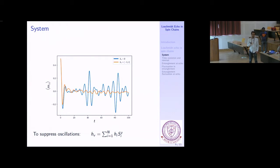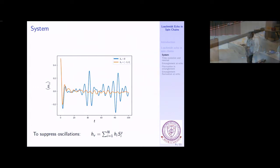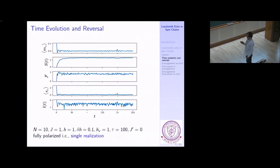for example, the transverse Ising model has very large amplitude fluctuations. I'm showing the mean magnetization as a function of time for system size like 8 or 10, which is routinely accessible. This is a problem because for the echo-type phenomena we want to study, this is too much background noise. To suppress this, we add a small amount of disorder — a small random component on top of the transverse field. The orange curve shows that this immediately removes the large coherent oscillations.